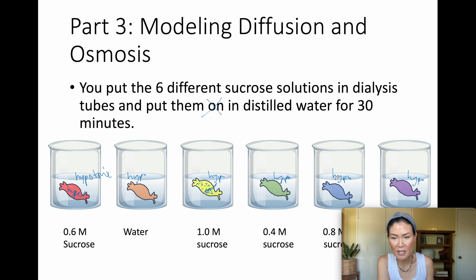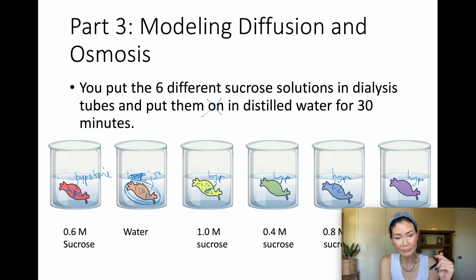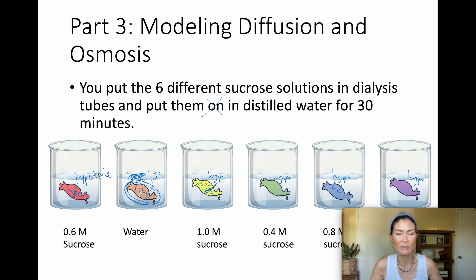Then blue (0.8 molar) should have the second highest gain in mass, then red (0.6), then green (0.4), then purple (0.2). The orange bag containing pure water should be essentially isotonic to the distilled water outside — equal water going in and out. If you got small positive or negative numbers for the orange bag, that's experimental error — maybe water on the scale or a small leak. The difference should be very small.